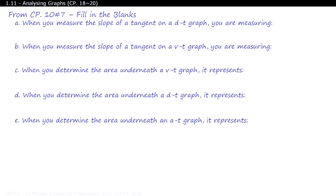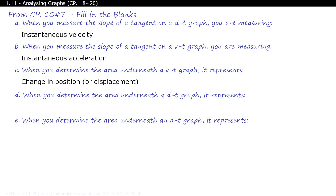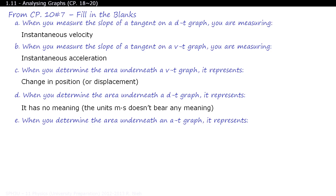Let's summarize some key ideas. When you measure the slope of a tangent on a DT graph, you're measuring the instantaneous velocity. When you measure the slope of a tangent on a VT graph, you're measuring the instantaneous acceleration. When you find the area underneath the VT graph, it tells you displacement — remember that displacement means change in position. When you find the area underneath the DT graph, note that the units are meters times seconds, which currently has no physical meaning. When you determine the area underneath an AT graph, that tells you the change in velocity.